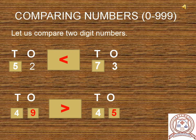Let us see another example. You can see two numbers: 49 and 45. Here, both the digits at tens place are same. So we will move to the next place value, which is ones. Let us compare 9 ones and 5 ones. 9 ones is greater than 5 ones. That means 49 is greater than 45.